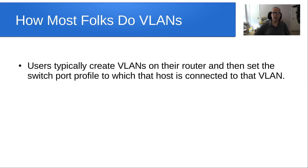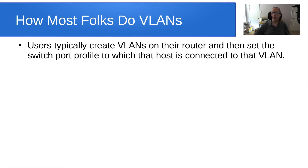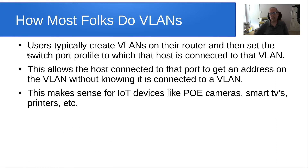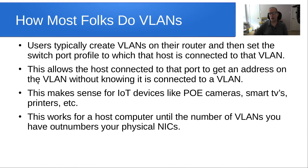How do most folks use VLANs? Users typically create VLANs on their router and then set the switch port profile for the port to which that device is connected. This allows the host connected to that port to get an address on the VLAN without knowing it's actually connected to a VLAN. This makes sense for things like IoT devices, PoE cameras, smart TVs, printers — other devices where we don't have access to the OS and can't define VLANs in the host OS. This also works for a host computer until the number of VLANs outnumbers the number of physical NICs you have.